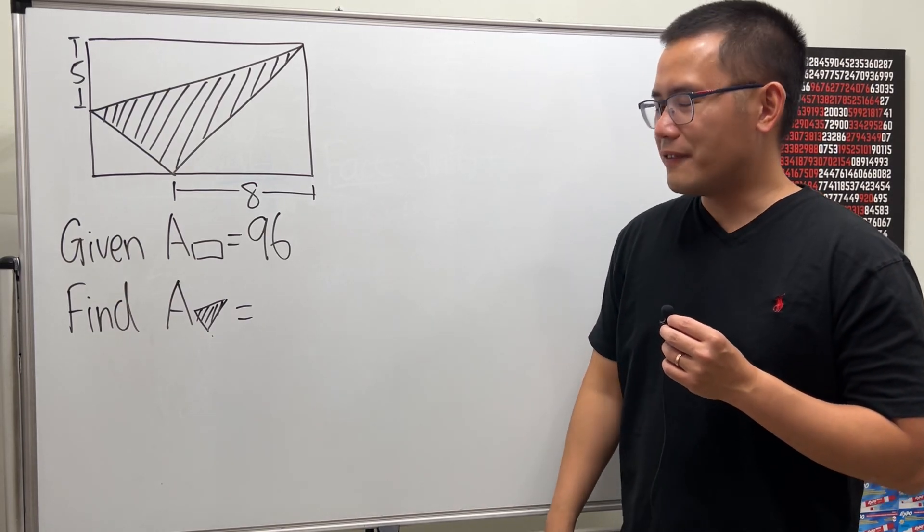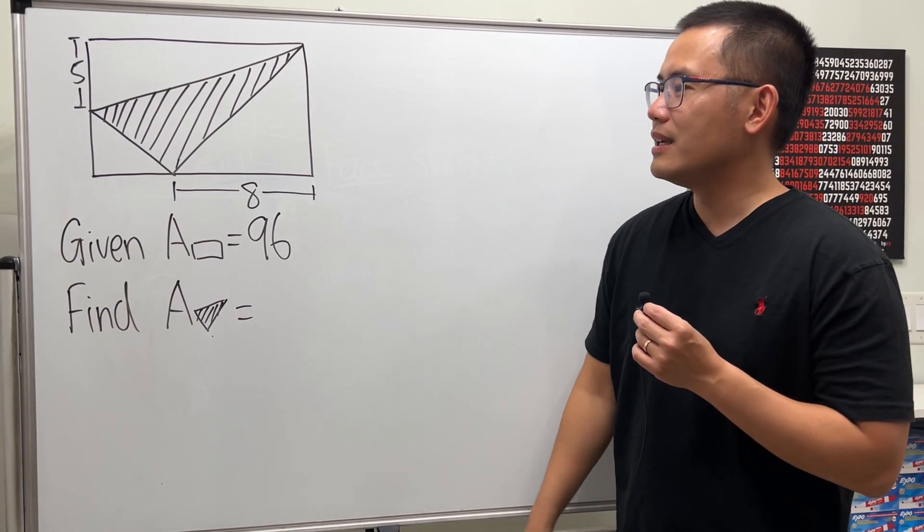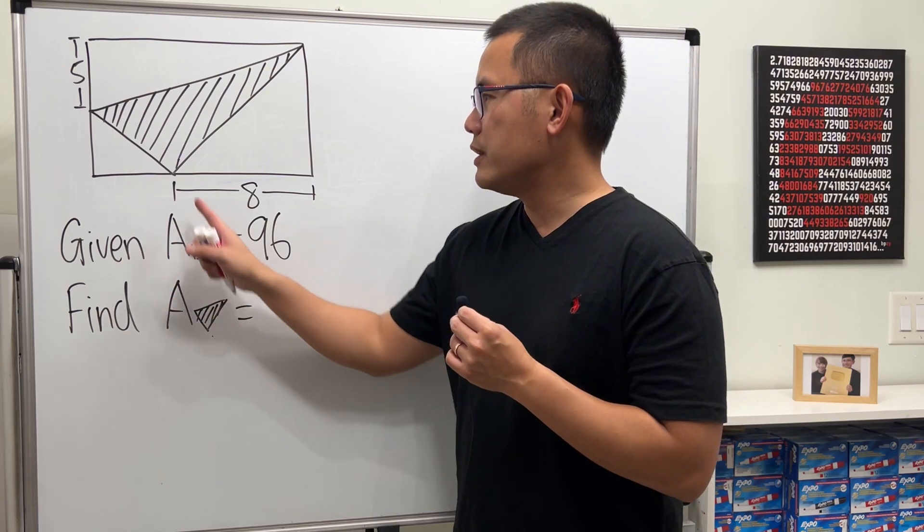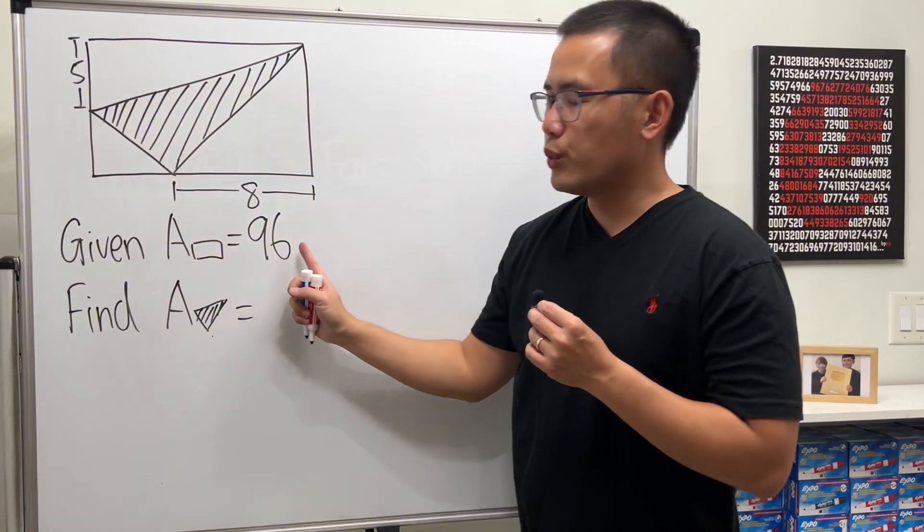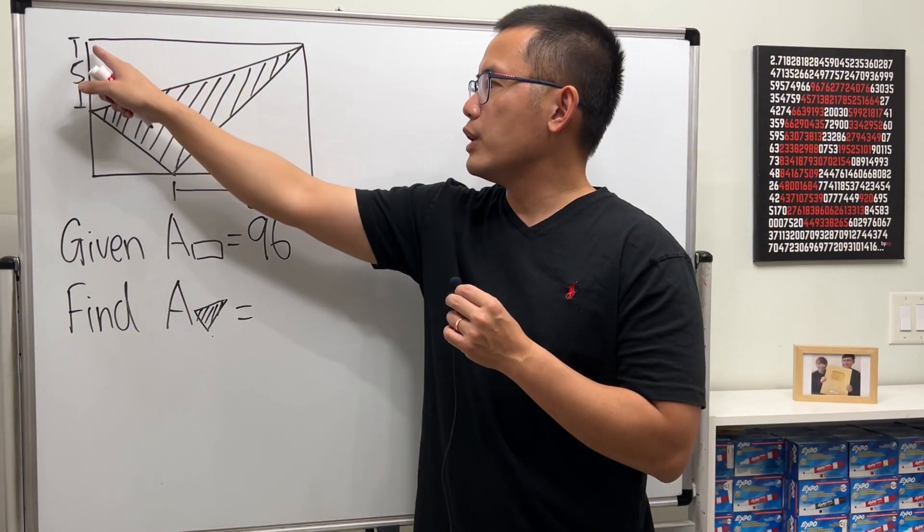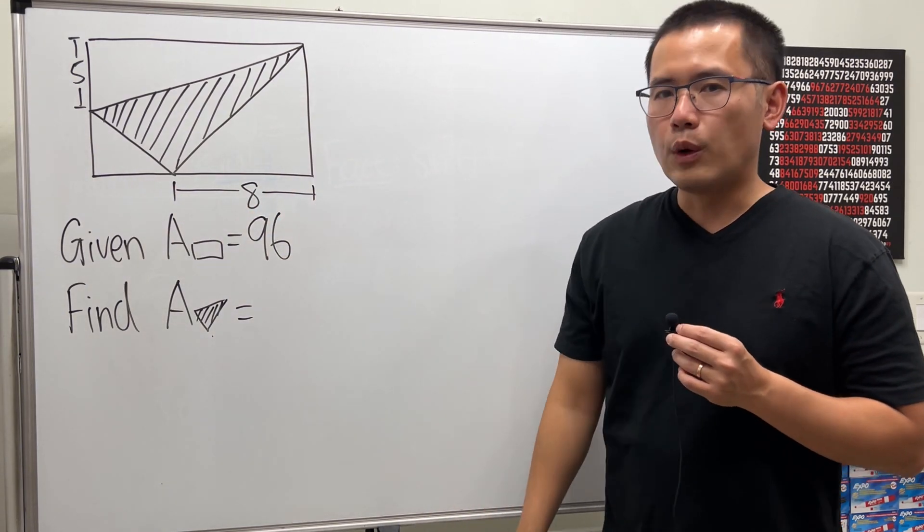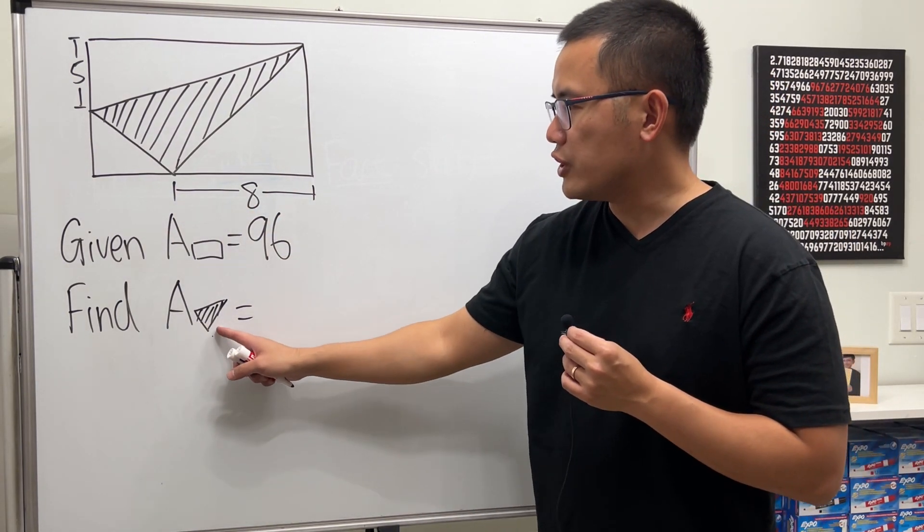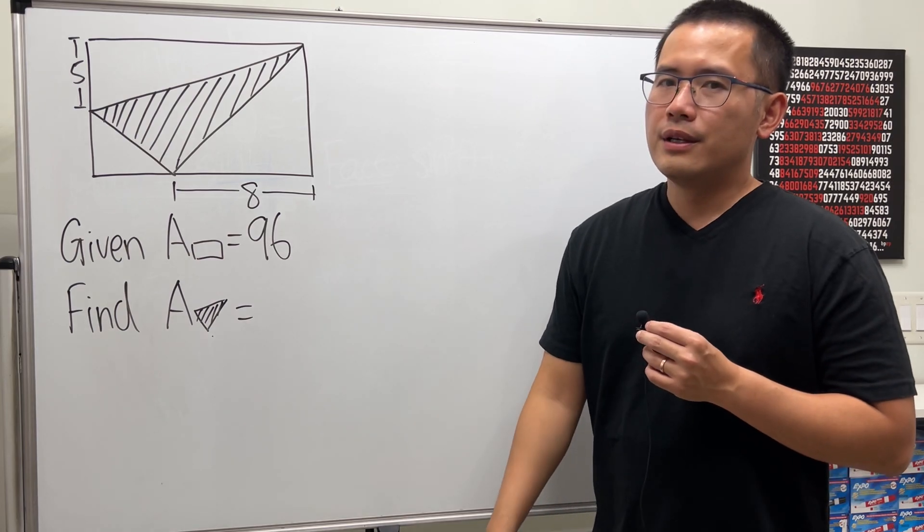This is a very interesting find the area question. Let's have a look. We are given that the area of the rectangle here is equal to 96, and we know that from here to here is 5 and from here to here is 8. Our goal is to find the area of the shaded triangle.